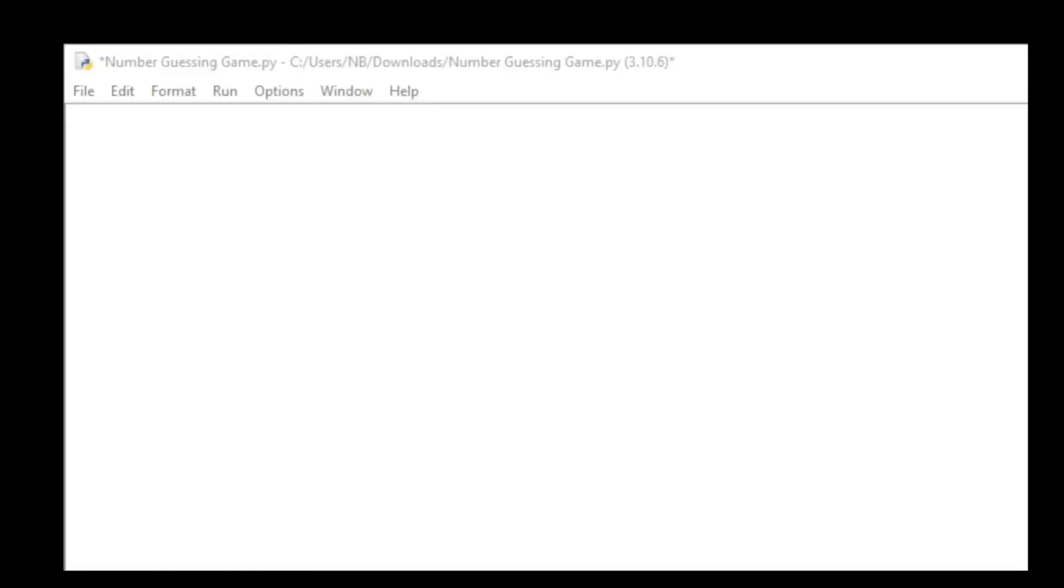To get random numbers in our code, we will use the random function. To do this, simply type import random. To get a random number between a range, we will first store that as a variable, so we'll create a variable called random_num, and then we'll use a random function, so random.randint.